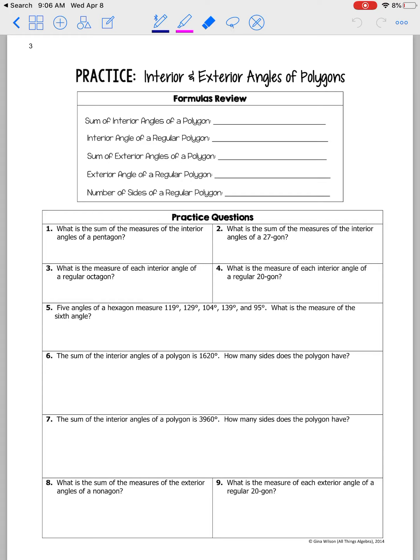So as a reminder with polygons, you need to be able to find the sum of interior angles of a polygon, which is represented by S. And we do that by taking the number of sides or angles that your polygon has, which is n, subtracting 2, and that gives us the number of triangles that that polygon has, and then multiplying by 180. And that gives us the number of degrees in that polygon.